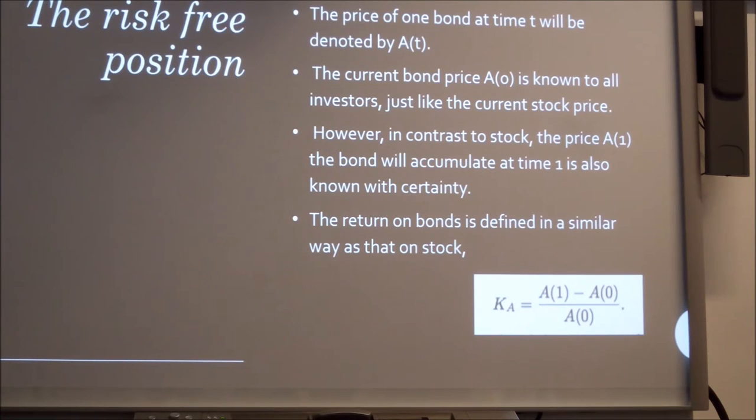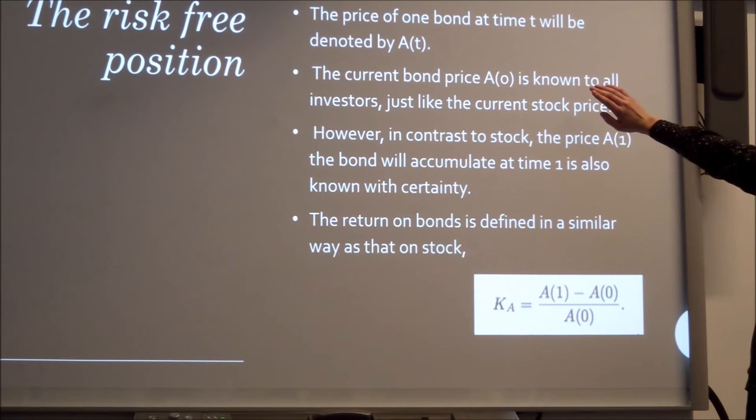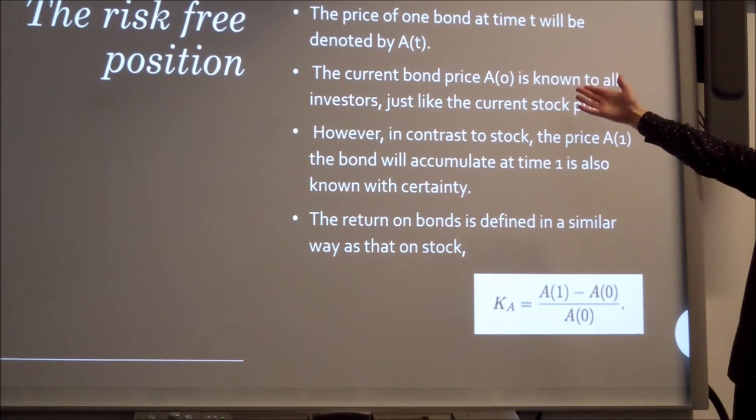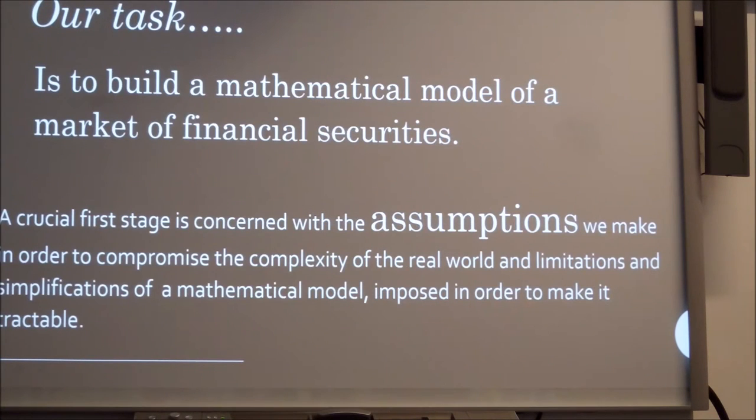The risk-free position will be noted by A, and like the current bond price A0, it is known to all investors. But A1 is also known to all investors because this is risk-free, so we definitely know the price our bond will have at time T equals 1. Then the returns on the bond is given by KA equals A1 minus A0 all over A0. So we will know the rate of return of our bond. So this one's more reliable, and it's usually the position less risky clients would want to take if they wanted to invest money over time.